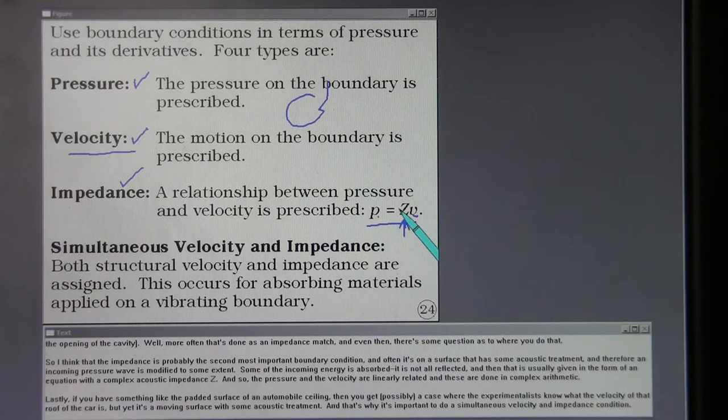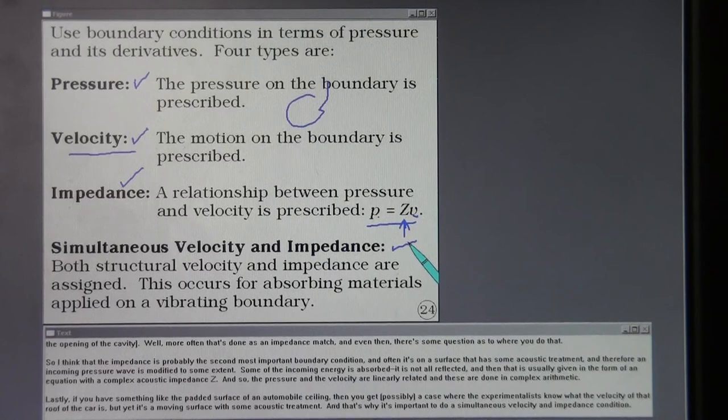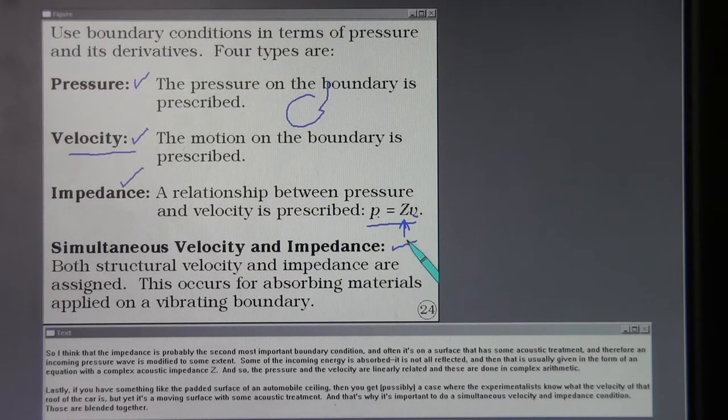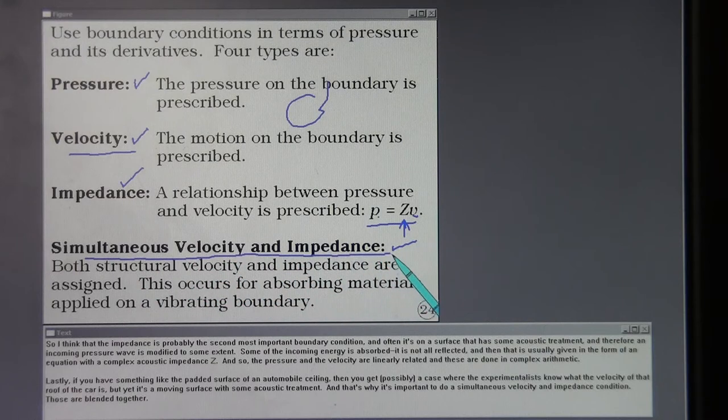Lastly, if you have something like the padded surface of an automobile ceiling, then you get possibly a case where the experimentalists know what the velocity of that roof of the car is. But yet it's a moving surface with some acoustic treatment. And that's why it's important to be able to do a simultaneous velocity and impedance condition. And those are blended together.